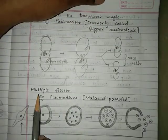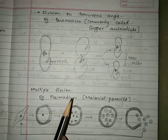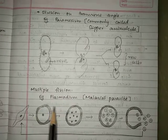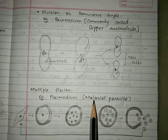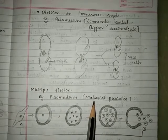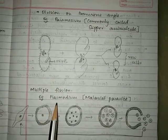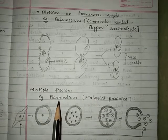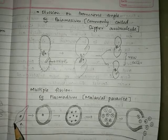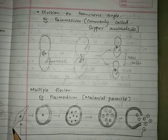The next type is multiple fission, where one cell divides into many cells. The example is Plasmodium, the malarial parasite — the organism responsible for causing malaria. Plasmodium is a spindle-shaped organism.